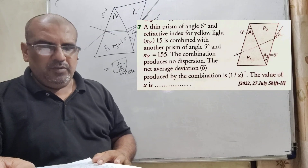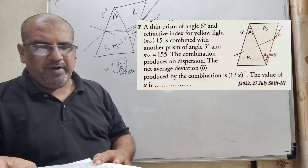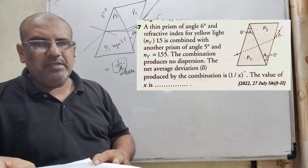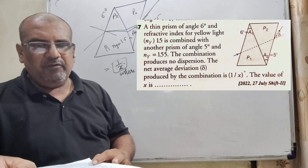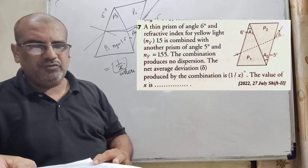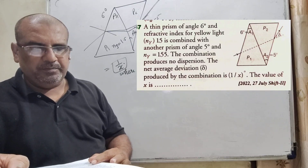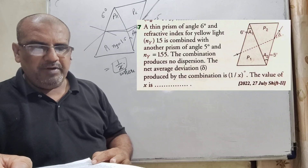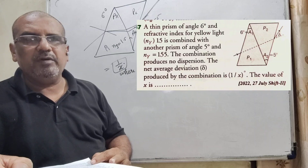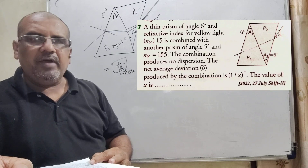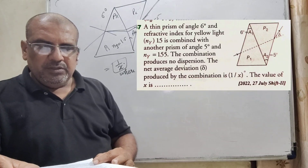Now here is the question. A thin prism of angle 6 degrees and refractive index for yellow light ny = 1.5 is combined with another prism of angle 5 degrees and n'y = 1.55. The combination produces no dispersion. The net average deviation delta produced by the combination is 1/x degrees. The value of x is to be filled in. This question is from JEE Mains 2022.